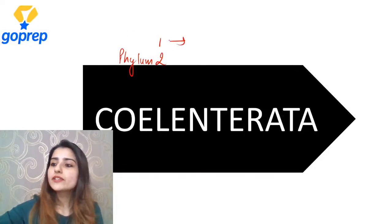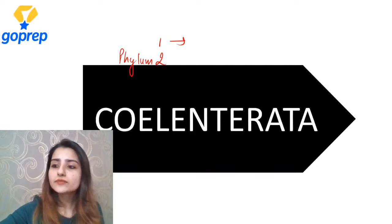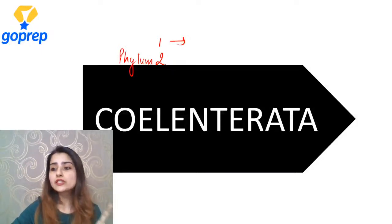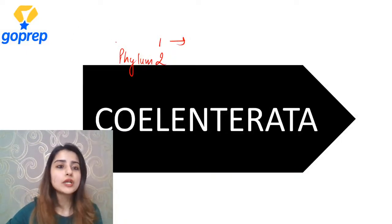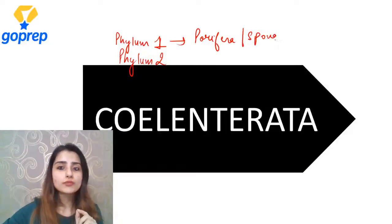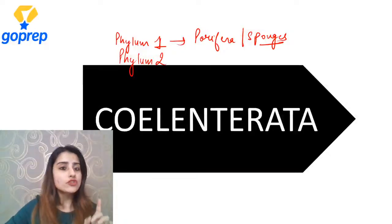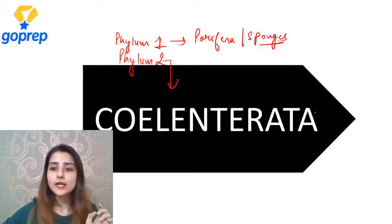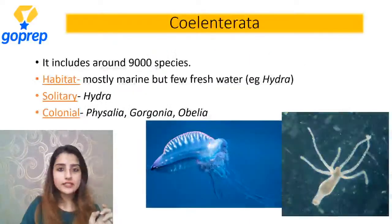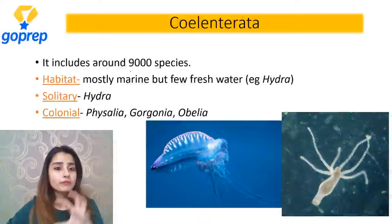Phylum number one kaun sa tha - fata fata se chat section mein bata dijiye. Yes, phylum number one that we discussed yesterday was Porifera - aur kya bolte the inko? Sponges, because they were pore-bearing animals. So today we are going to discuss phylum number two, that is Coelenterata. This Coelenterata is also called Cnidaria - isi ka doosra naam hai Cnidaria. Let us start with the characteristics.